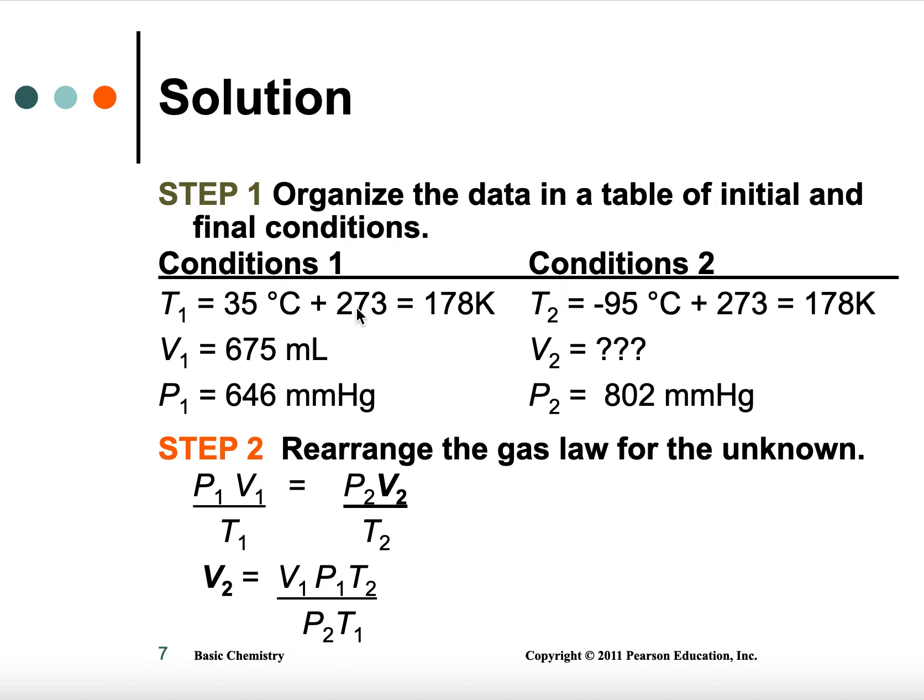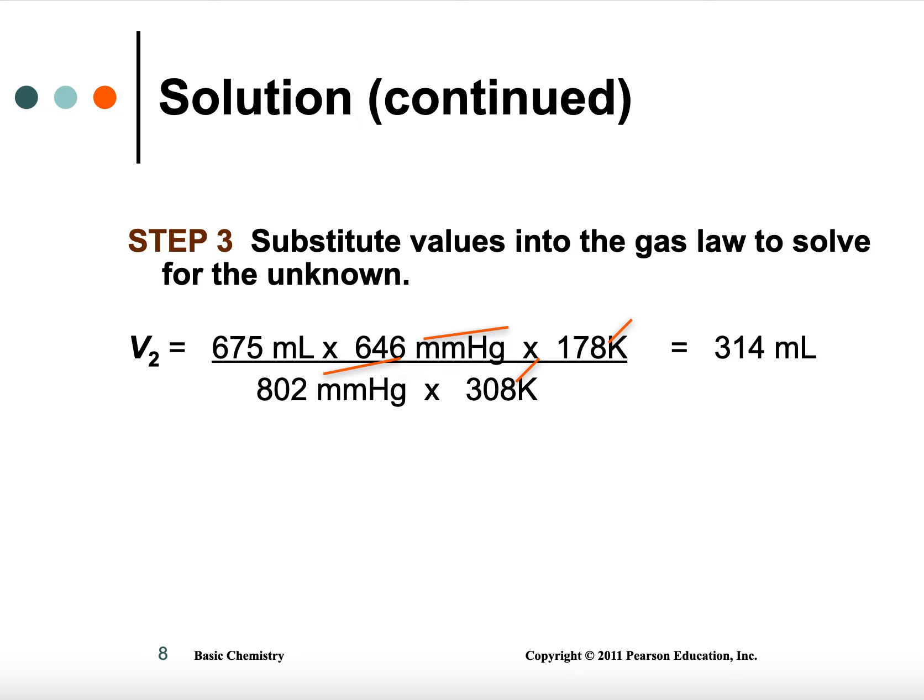So temperature has to be added 273, so it has to be in Kelvin. And then you need the pressure to be changed to millimeters of mercury first, then solve for your answer, fill everything in, and you'll end up with your answer.